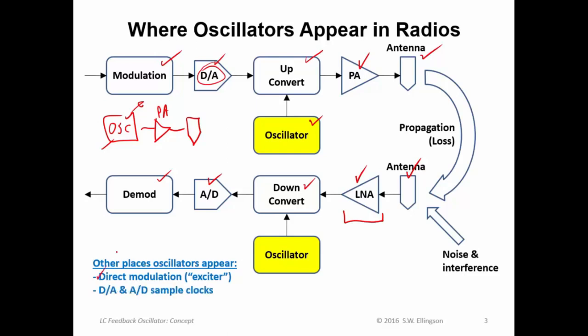We also use oscillators as sample clocks. The A to D here and the D to A here both sample according to a schedule. And so they require a clock. And that clock is a form of frequency synthesis. So one way to do that is with an oscillator.